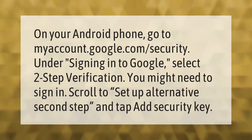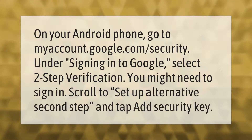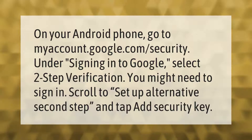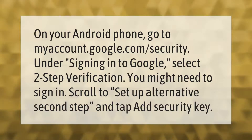On your Android phone, go to myaccount.google.com/security. Under signing into Google, select two-step verification. You might need to sign in. Scroll to set up alternative second step and tap add security key.